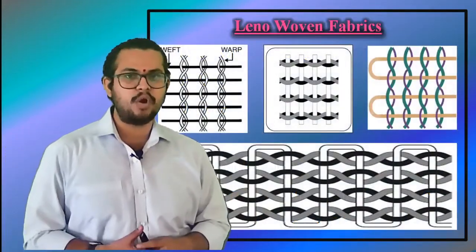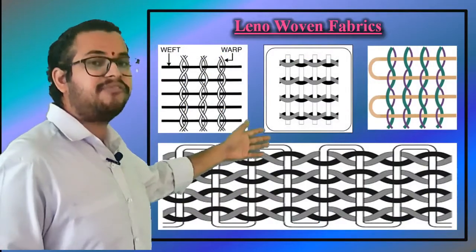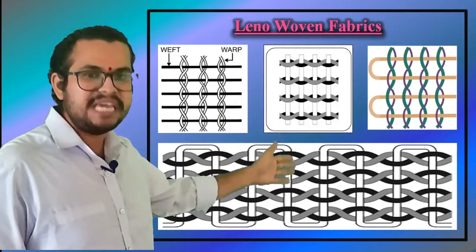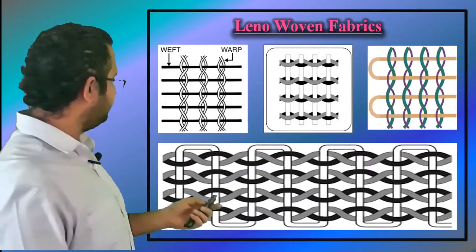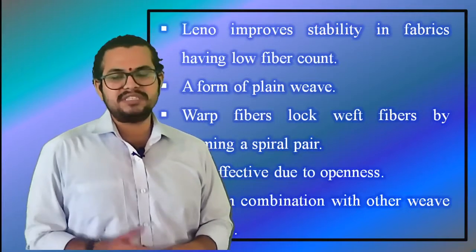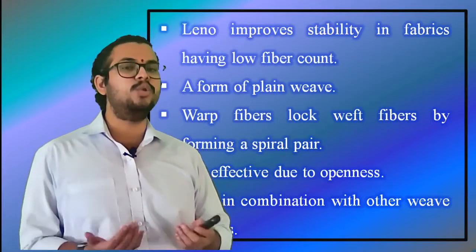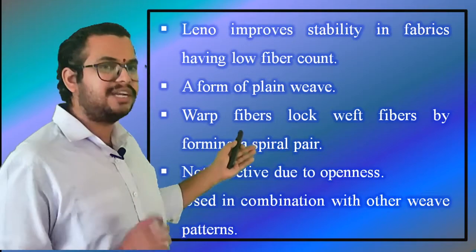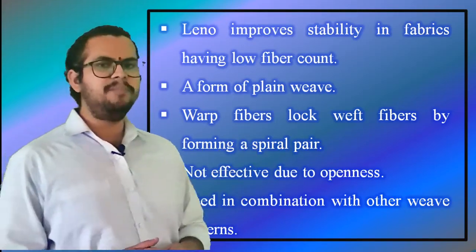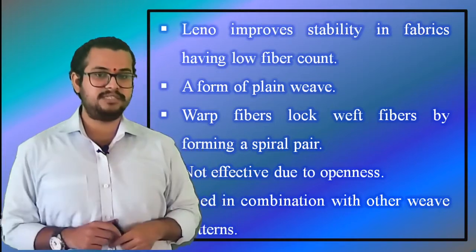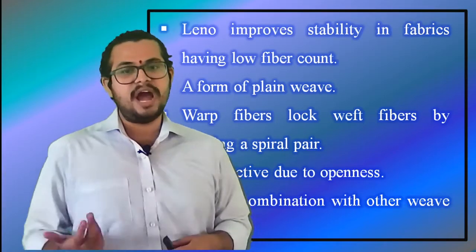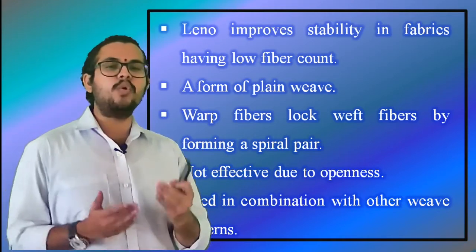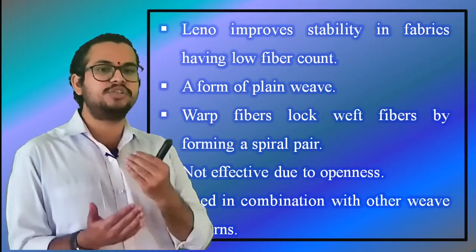Leno woven fabric composite. Leno weave improves the stability in open fabrics that have a low fiber count. It is a form of plain weave in which adjacent fibers are twisted around consecutive weft fibers to form a spiral pair, effectively locking each weft in place. Fabrics in leno weave are normally used in conjunction with other weave styles, because if used alone their openness could not produce an effective composite component.